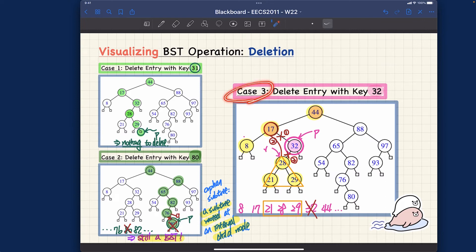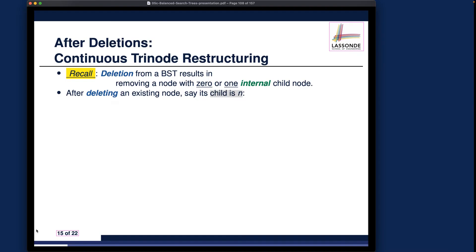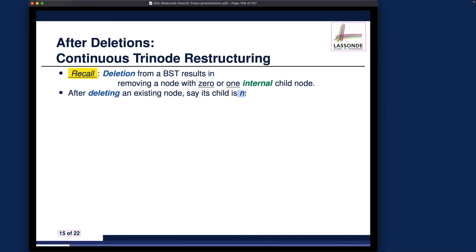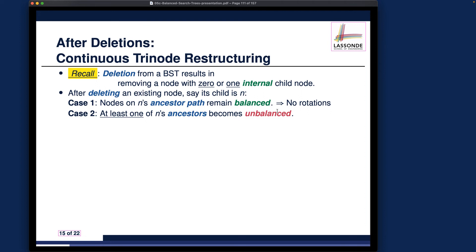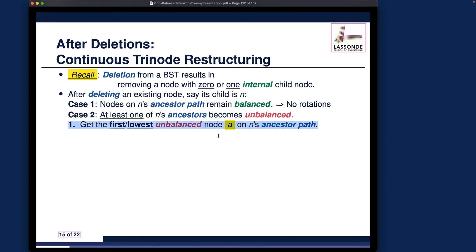If you ended up in case three, the child node of the removed node - which is connected to the original node's parent - is the starting node from which you look up the ancestor path to check for unbalanced nodes. Let's call that child node n. If all nodes along n's ancestor path remain balanced, no rotations are needed. If at least one node becomes unbalanced, we do something similar to what we did for insertions - find the first or lowest unbalanced node along the ancestor path and call it a.